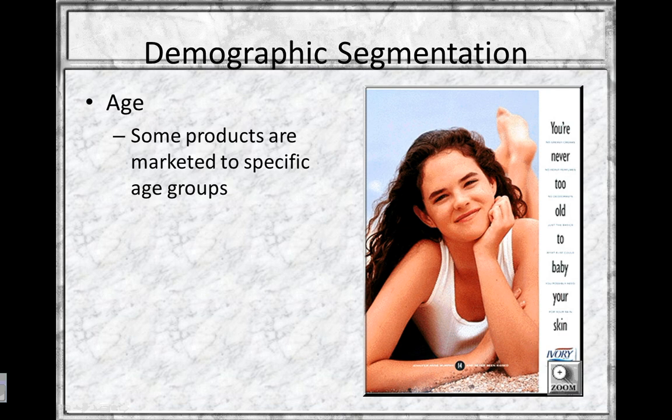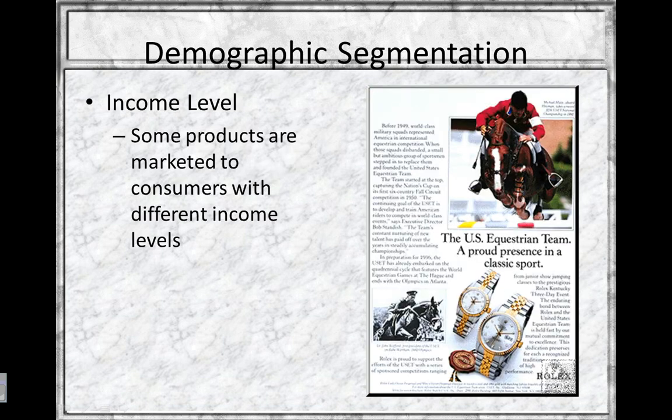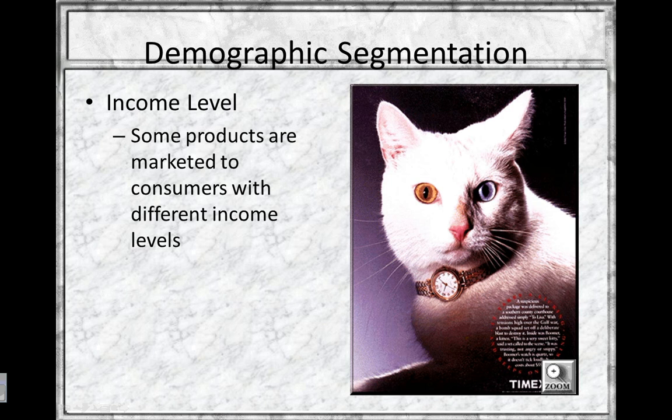Here are some examples. For age, some products are marketed to specific age groups — sometimes for young people, sometimes for older people. For income level, a Rolex advertisement is marketed to people with a very high income, while a Timex watch could be marketed to a different income level than the Rolex.